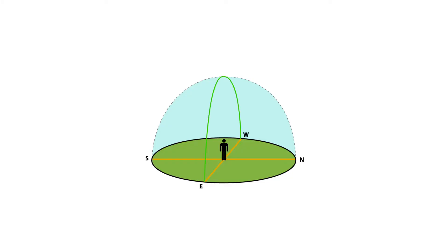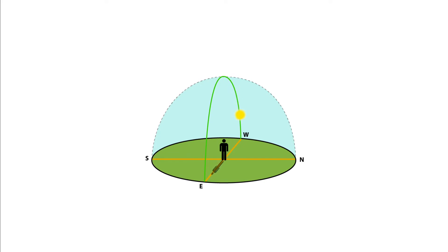The first factor is time of day. This green line represents the Sun's daily path through the sky. It rises in the east, travels across the sky, and sets in the west. Notice that throughout the day the shadow moves from west to east.